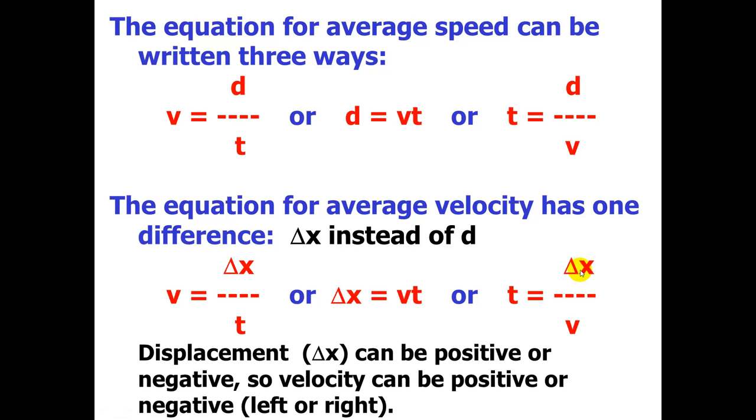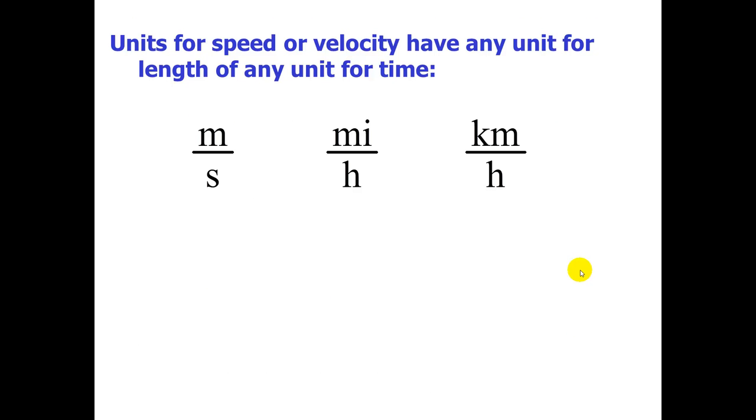Displacement, delta x, can be positive or negative, as we saw with the girl riding her bike. So, velocity can be positive or negative, meaning moving to the left or moving to the right. And, usually, we call to the right positive, and to the left negative, like a number line. The units for speed or velocity have any unit for length over any unit for time. So, meters, miles, kilometers, those are our units for length. Seconds, hours, those are our units for time.